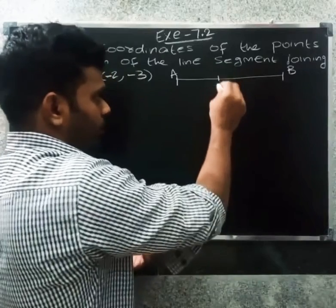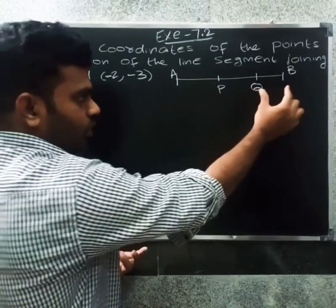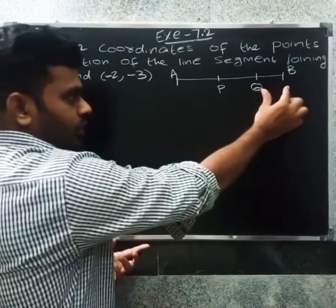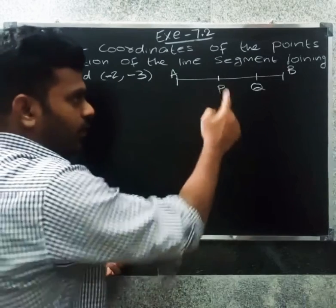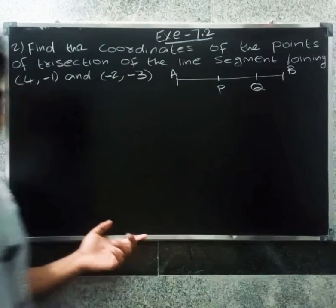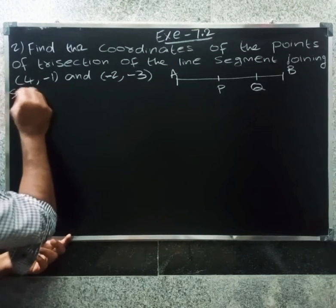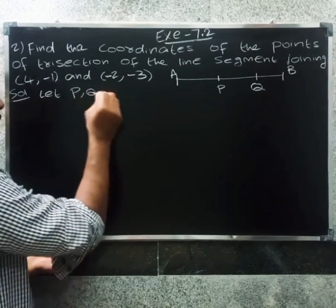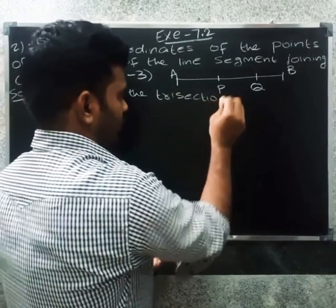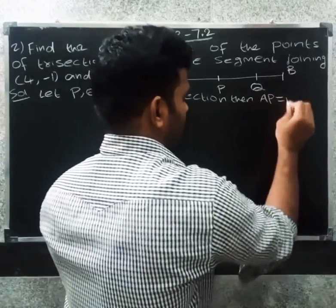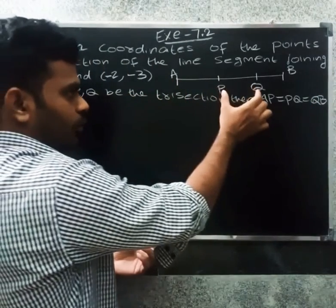For trisection, we have points P and Q on the line segment, giving three parts: AP, PQ, and QB. Let P and Q be the trisection points. Then AP equal to PQ equal to QB — so the segment is divided into 3 equal parts.